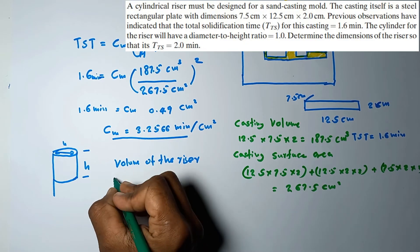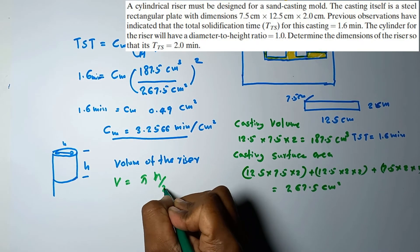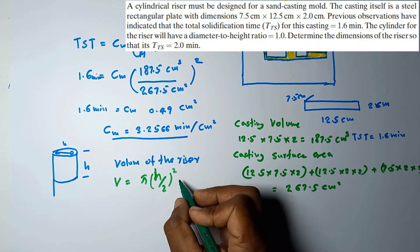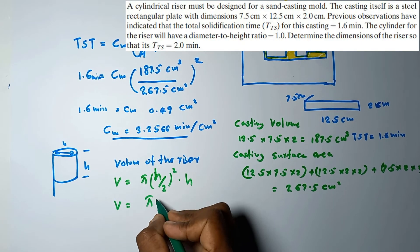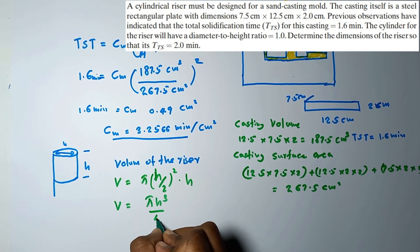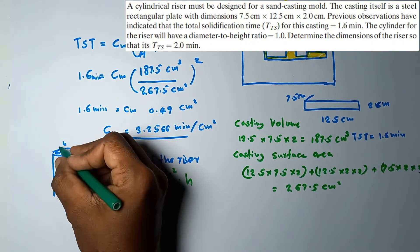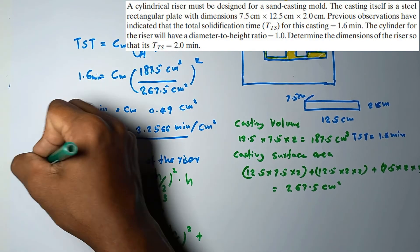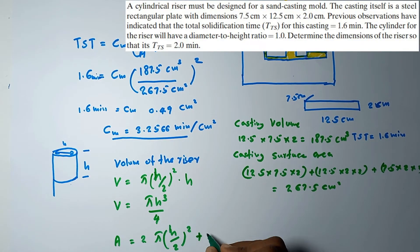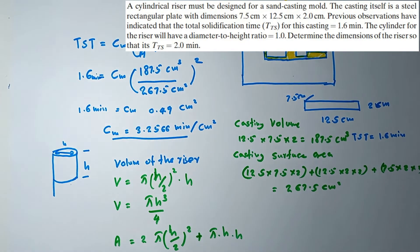The volume of the riser: V = (π/4) × (h/2)² × h... wait, cross-sectional area times h gives volume V = πh³/4. For the surface area, we have two circular faces: 2 × π × (h/2)², plus the curved surface area π × h × h, which gives the total surface area.